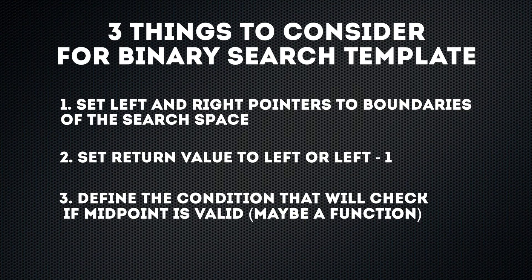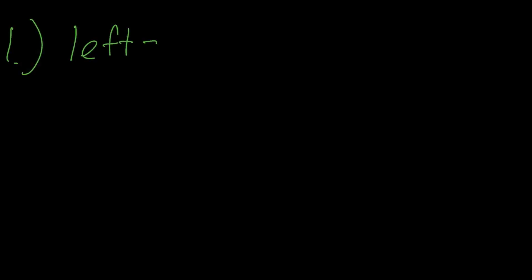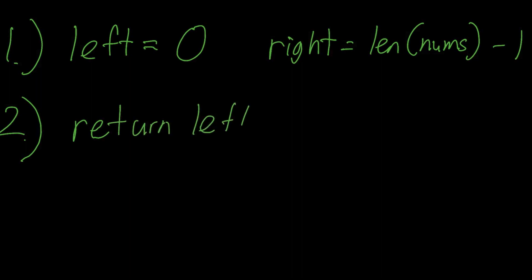Because now with binary search, you can reduce half the nums in an array at each iteration instead of just one number. So let's use our binary search template and address the three things. Number one, what's our left and right pointer going to be? We already know that the answer has to be in the array. So we can just set the left pointer to zero and the right pointer to the last index of the array, which is length of array minus one. Number two, what are we returning?